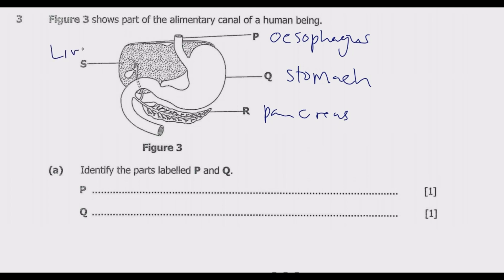S is the liver. The liver is the largest solid organ in the body and it performs over 500 vital functions. Among the key functions are: detoxification of harmful substances, production of bile for digestion, regulation of blood sugar levels, production of certain proteins for blood plasma, and regulating blood clotting. Take note of those key functions as you prepare for your exams.